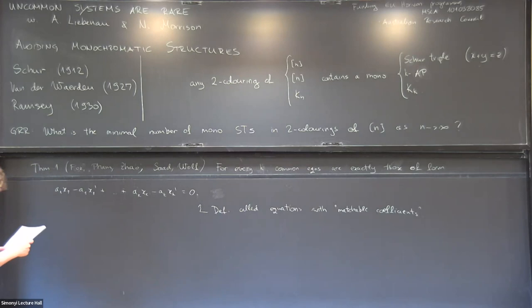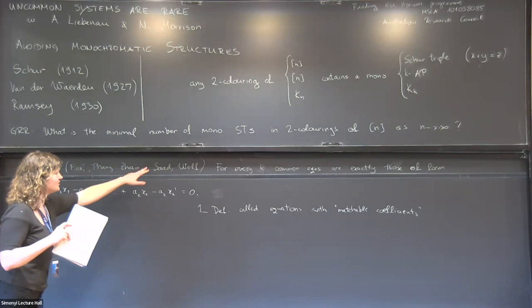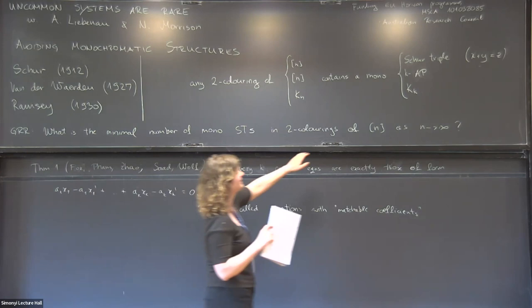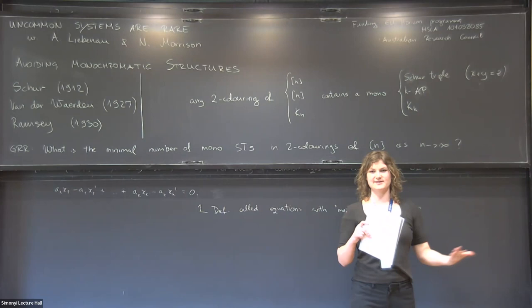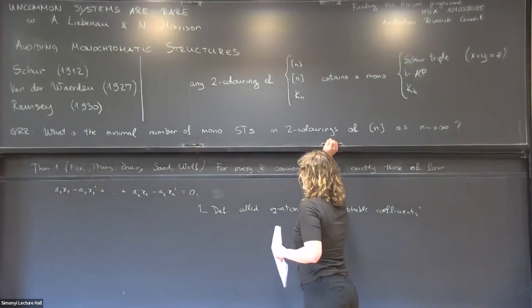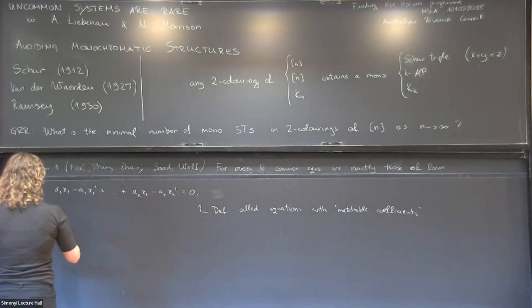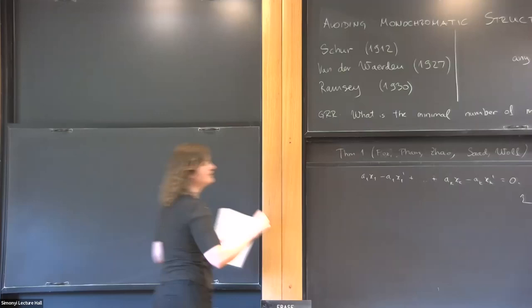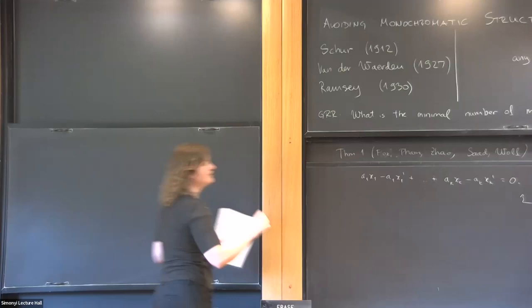A natural follow-up question, which Fox-Pham-Zhao also asked, is characterizing systems of equations. For instance, k-term arithmetic progressions are described by a system of linear equations — is this system common? Let me first define what I mean by a system, then define commonness, and then state our results.